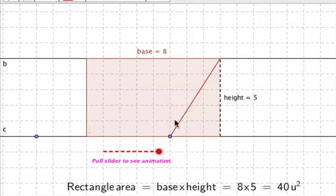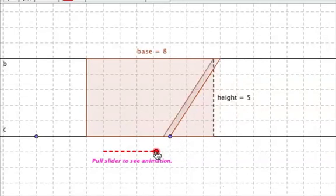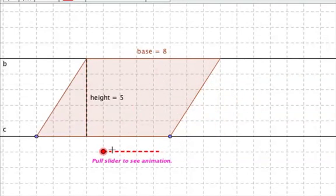We know that the area of a rectangle is base times height, so the base has eight units across, the height has five units up and down, so the area of this rectangle is eight times five, which is forty square units, which means the area of the parallelogram is the exact same thing. So the area of the parallelogram is forty square units.